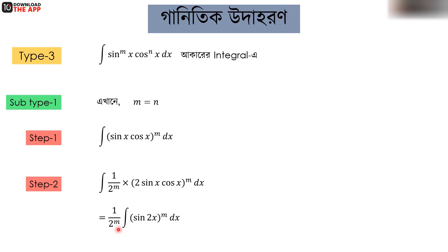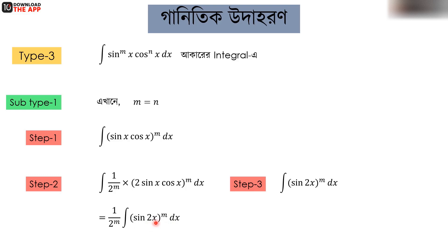We have 1 by 2 to the power m, and we have sin 2x whole to the power m dx. So we have Step 3: integration of 1 by 2 to the power m, and integration of sin 2x whole to the power m. This is the first type of integral — we have seen integration of sin to the power mx and cos to the power mx as a standard type. Then we have integration of sin 2x to the power m dx.